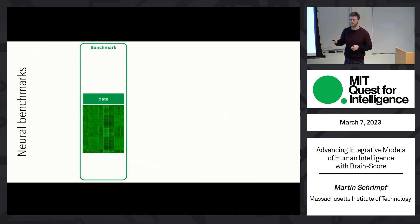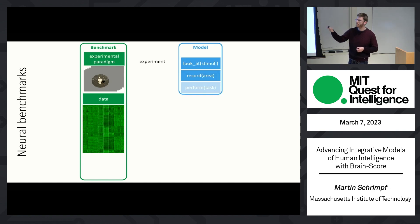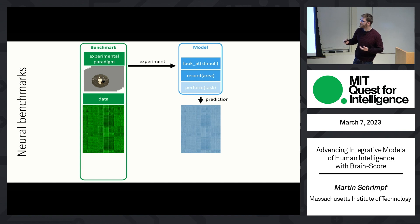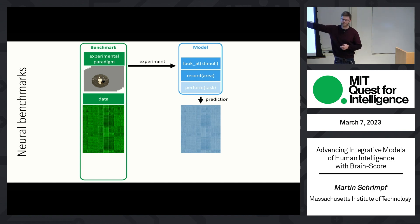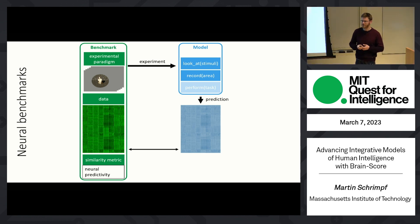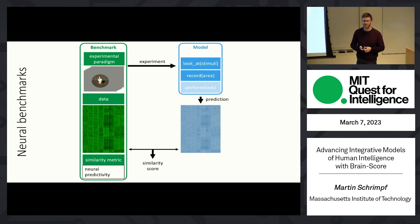We can run this on models as well — we show again the same images, and in the model we can record from different layers. Just imagine there is a particular layer in the model that we like — those internal layer activations are our prediction, and we compare them to the data. One method I like is called neural predictivity, where we try to predict the activity for unseen images, and then again we get a similarity score.